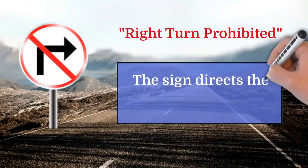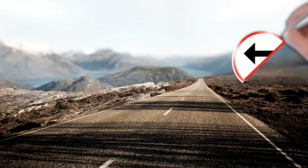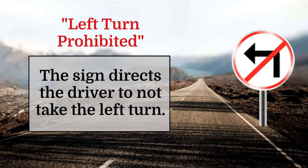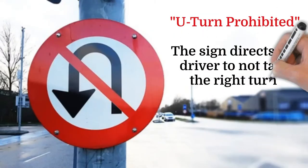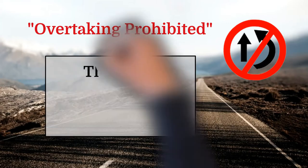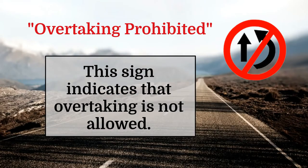Right turn prohibited: the sign directs the driver to not take the right turn. Left turn prohibited: the sign directs the driver to not take the left turn. U-turn prohibited: this sign directs the driver to not take the U-turn. Overtaking prohibited: this sign indicates that overtaking is not allowed.